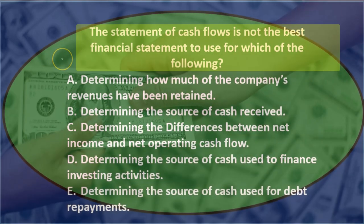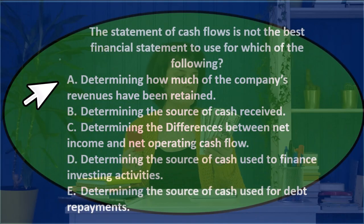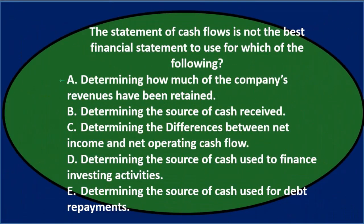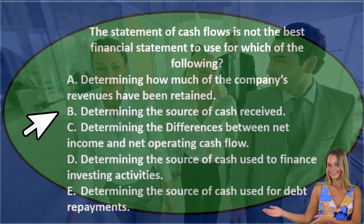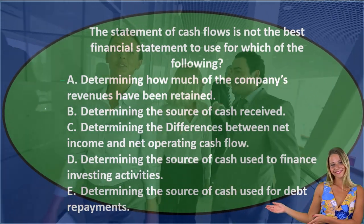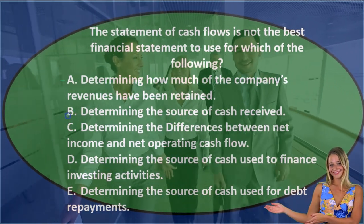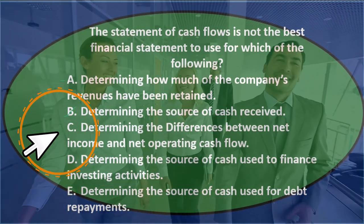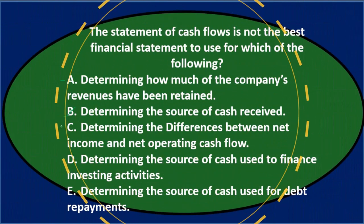Let's go through this again. A — determining how much of the company's revenue have been retained — I don't see any cash flows there, so I'll keep that as uncertain for now. B — determining the source of cash received — that's about cash being received, so the cash flow statement would cover that; I'll cross that out. C — determining the difference between net income and net operating cash flows — I'll keep that for now, not totally sure.